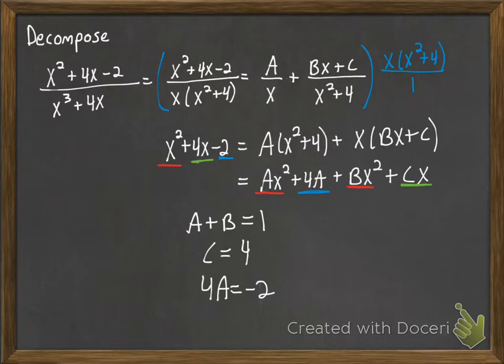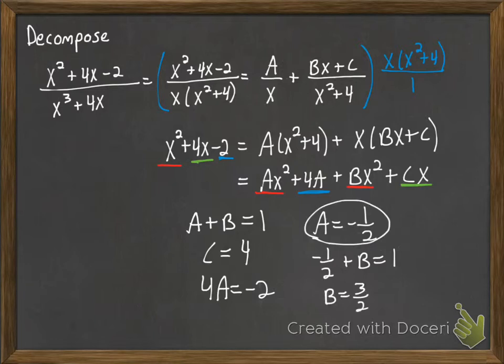And then we begin to solve. Well, we already know what c needs to be. So we just solve now for a. 4a equals negative 2. So we divide by 4, we get a equals negative 1 half. Now we know a and c, we just need to know b. So we go to the a plus b equals 1. Plug in the a as negative 1 half plus b equals 1. So we solve for b. And we find that b has to be 3 halves.